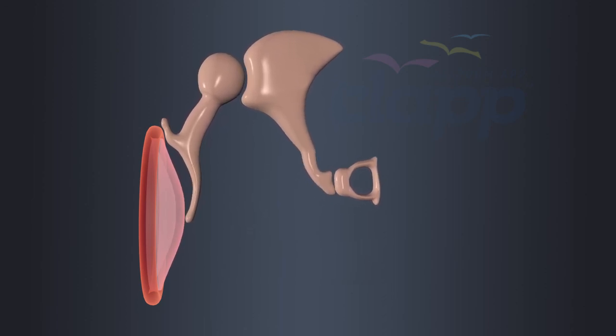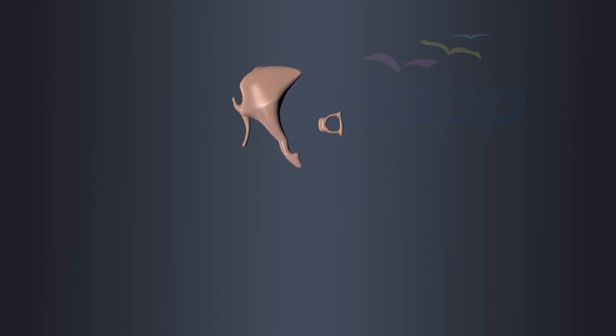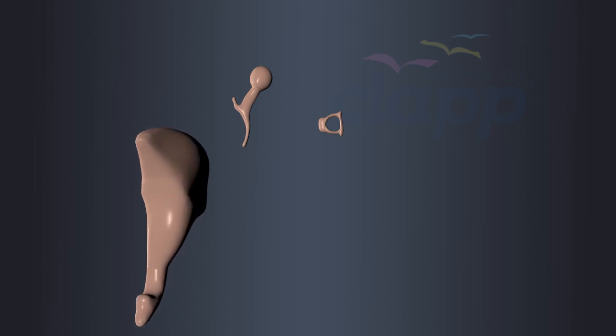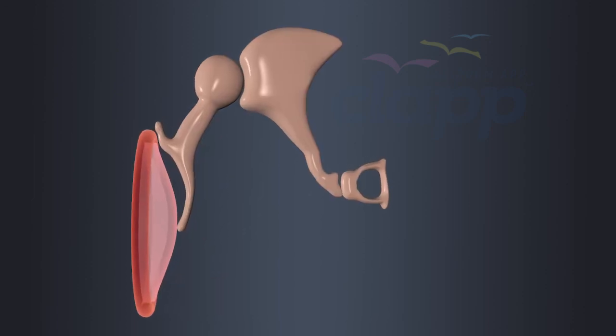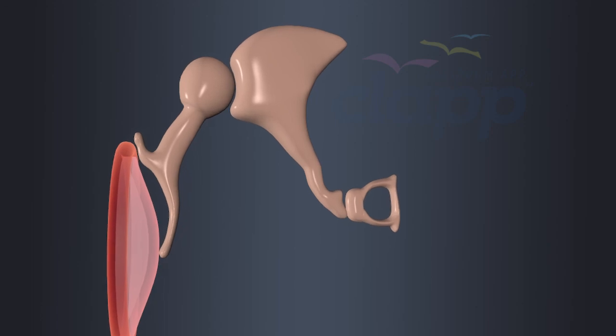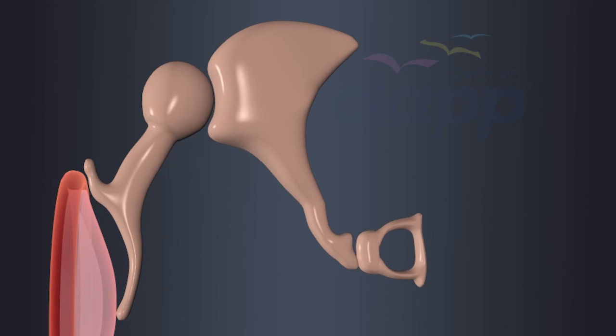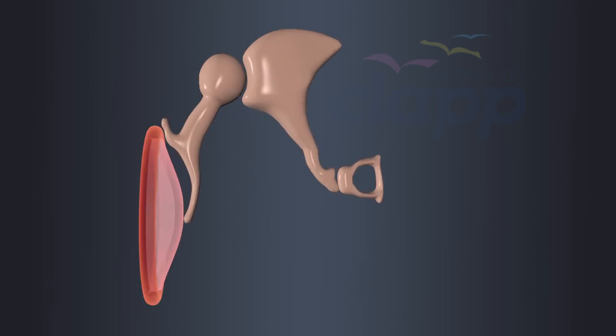Incus is the second bone in ossicles. Average size of incus is about 6.8 mm in height and 5.3 mm in width. Incus acts as an intermediary between malleus and stapes. One end of the incus is connected with malleus and the other end is connected with stapes. Incus transfers the vibrations received from malleus to stapes, the third bone in the ossicles.